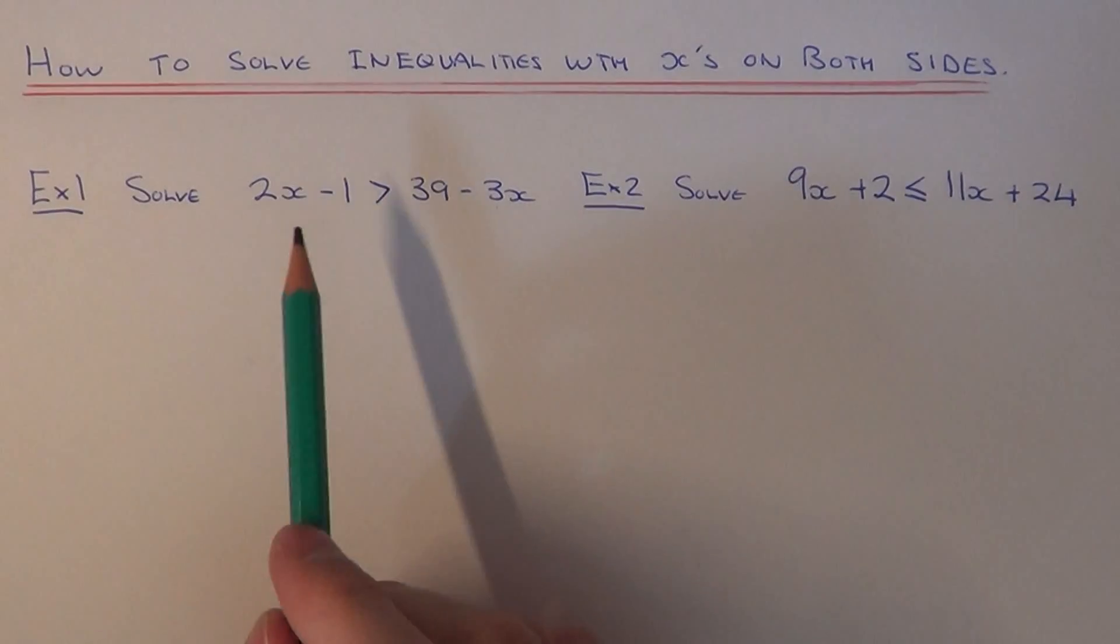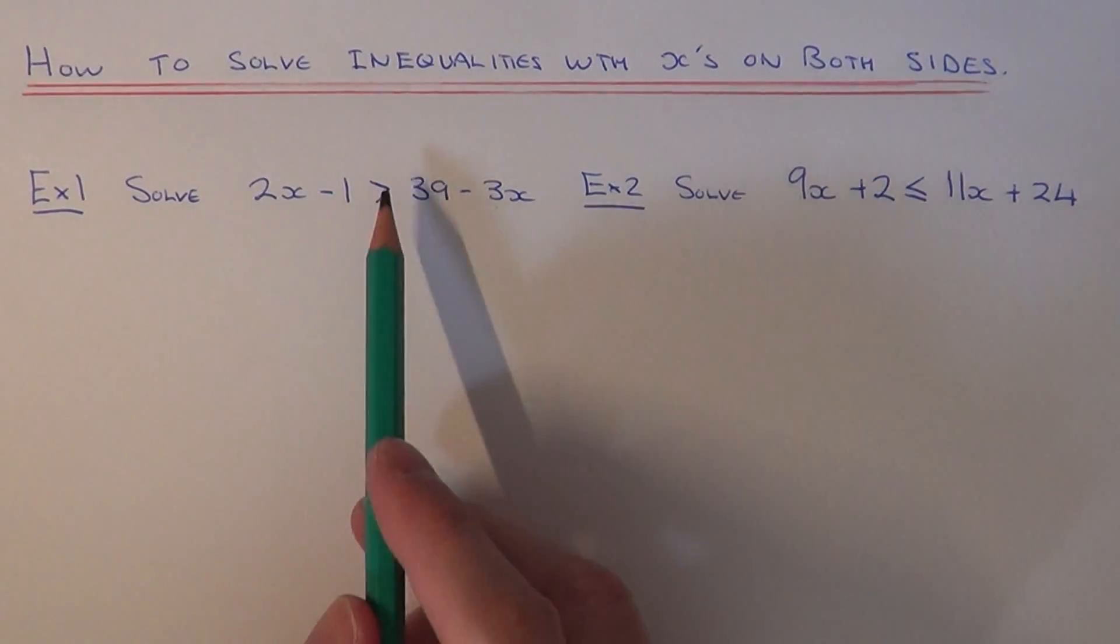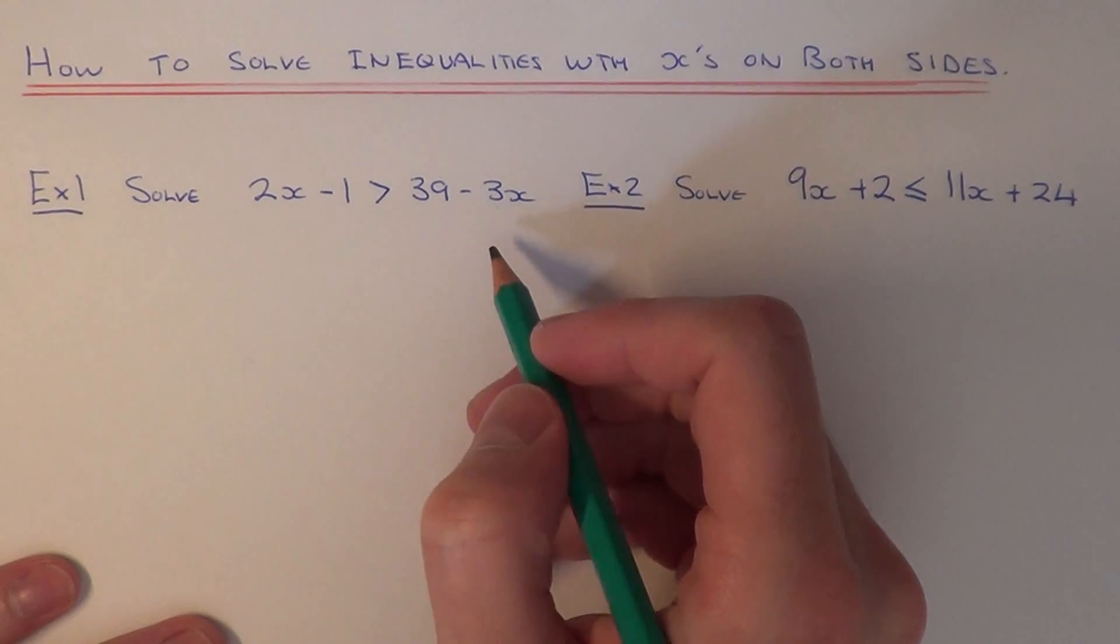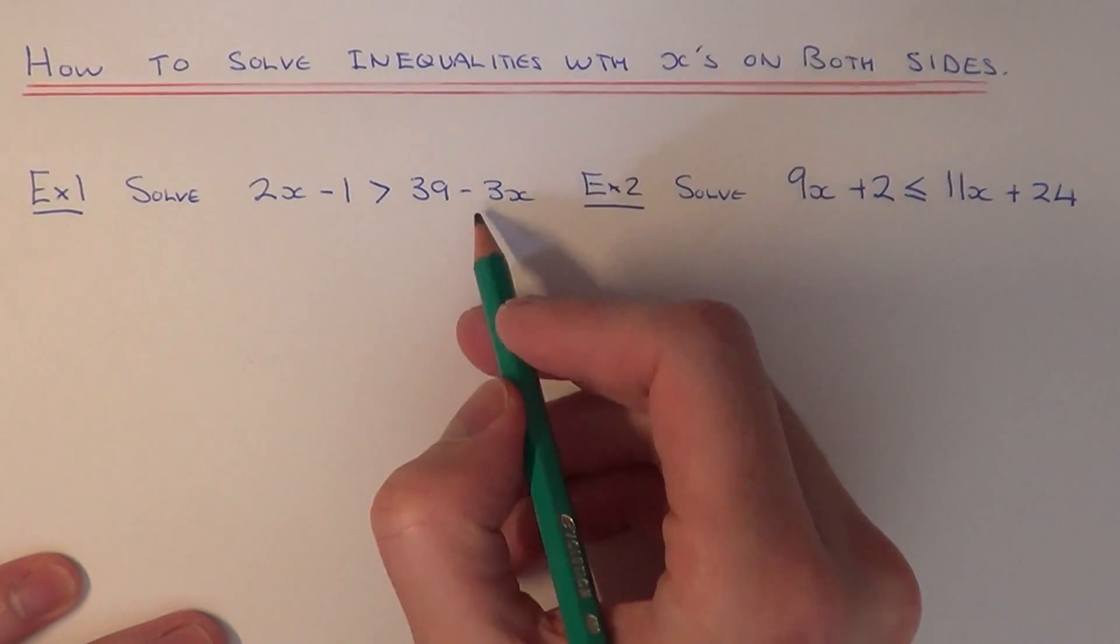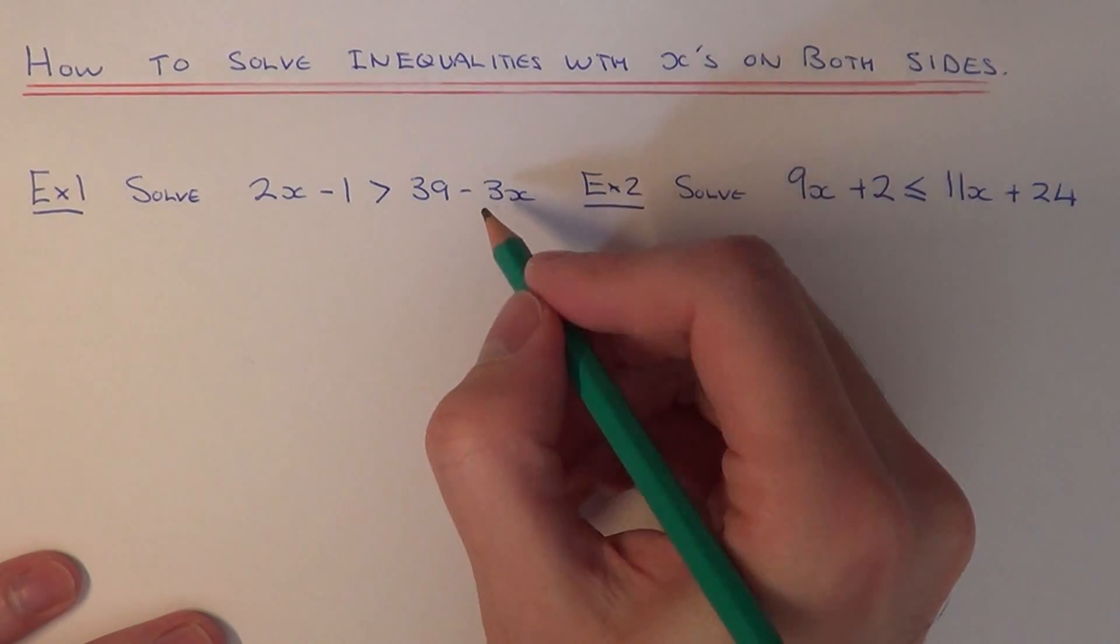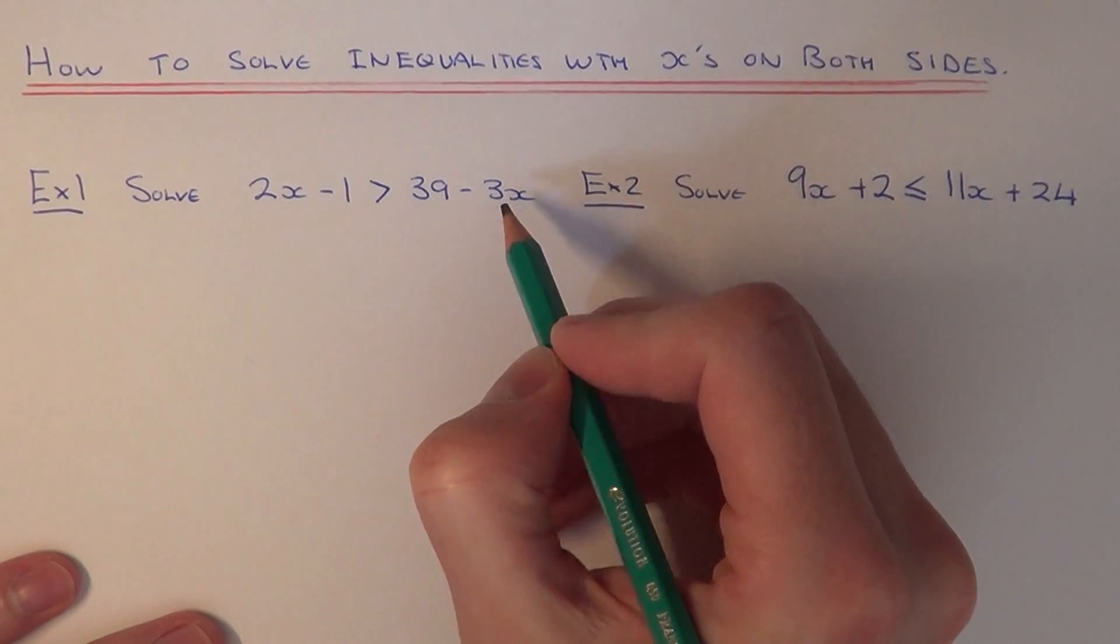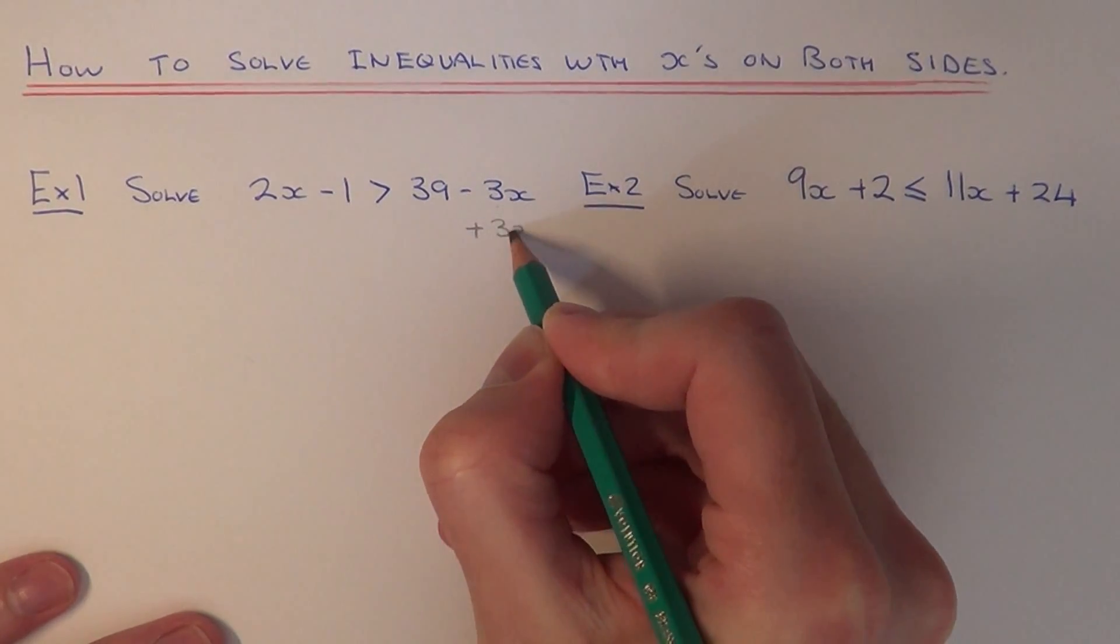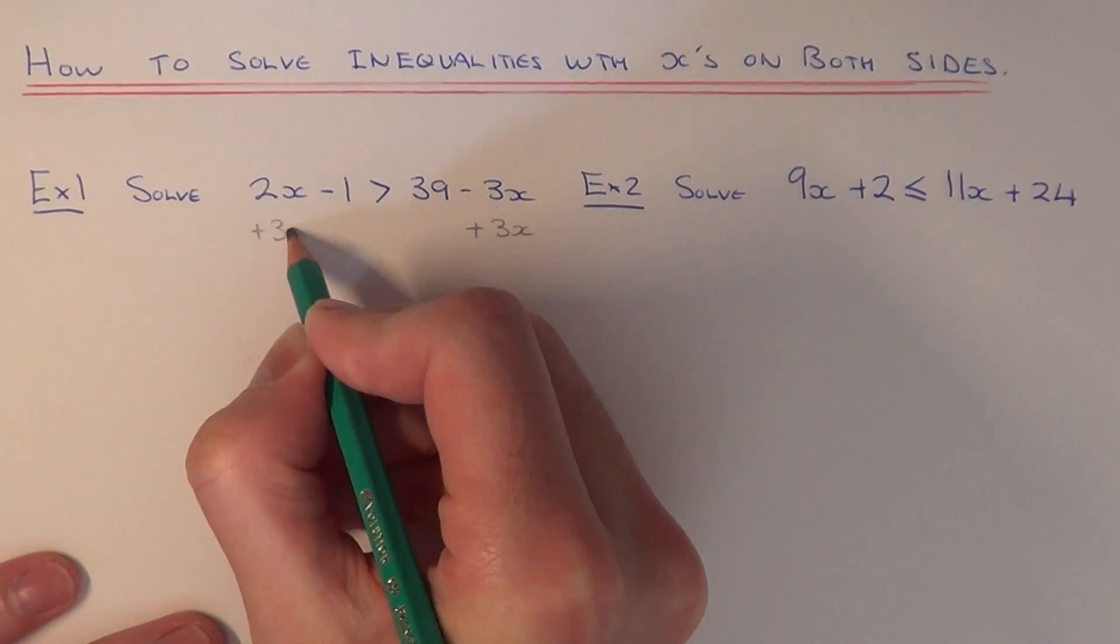For example 1, we've got to solve the inequality 2x minus 1 is more than 39 minus 3x. So the first thing we need to do is get rid of the minus 3x off the right-hand side of the inequality. So we can do this by adding 3x to both sides.